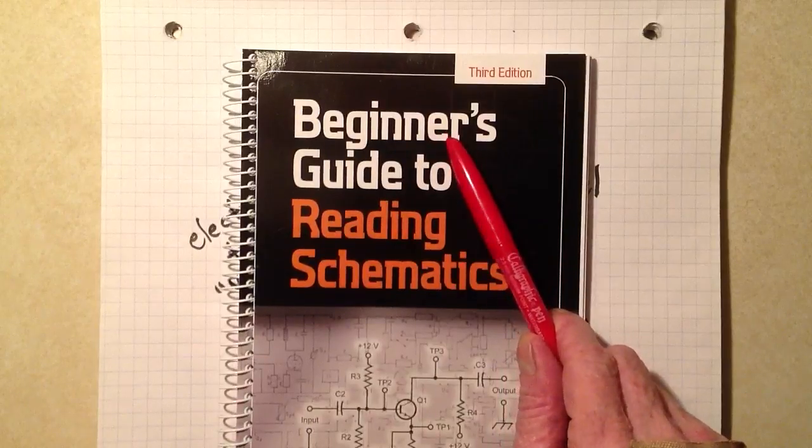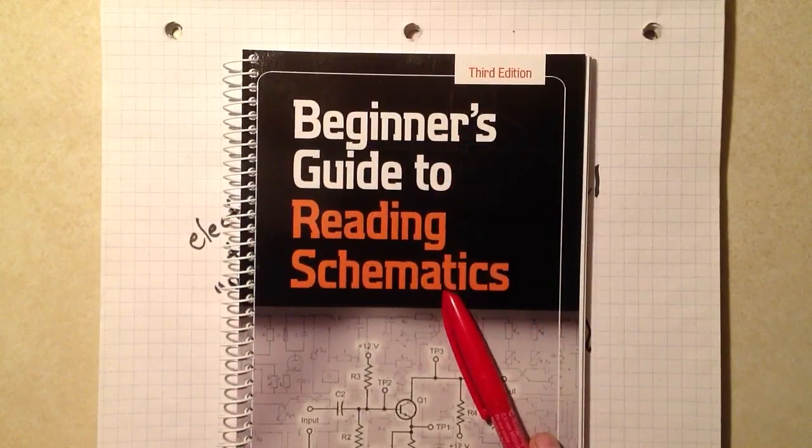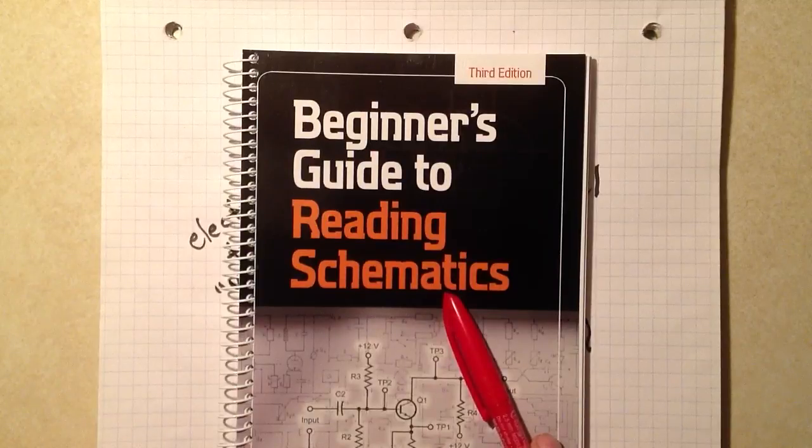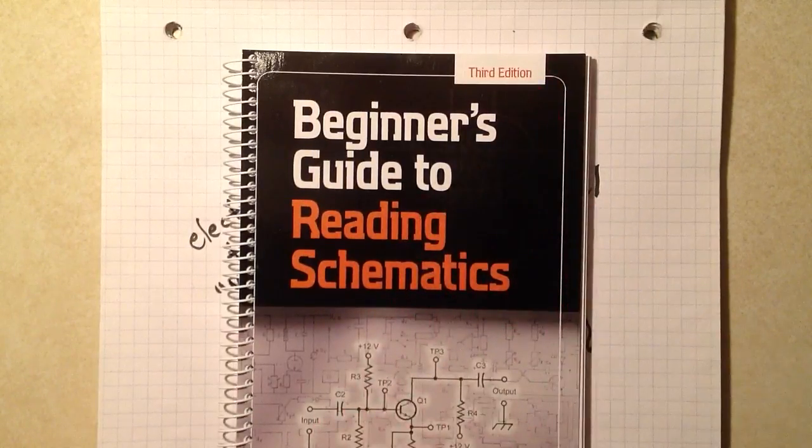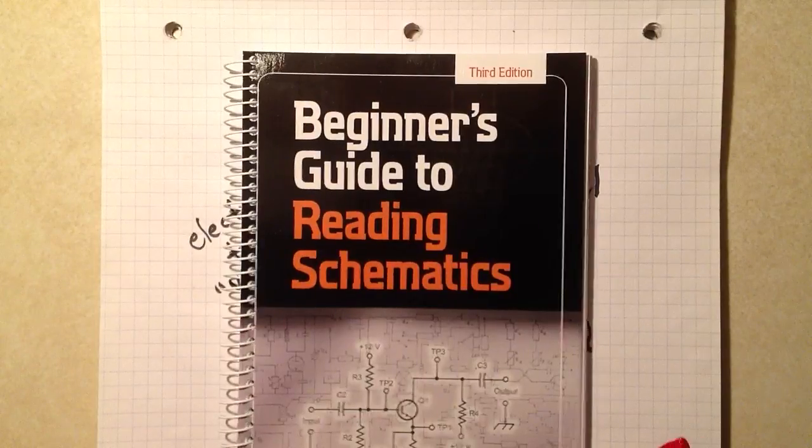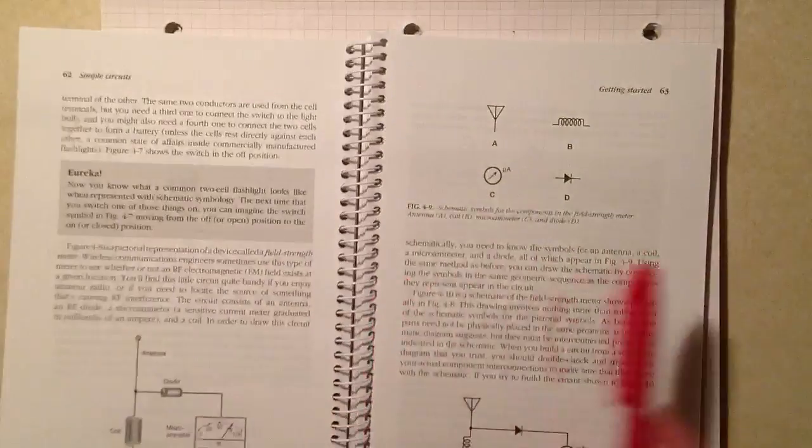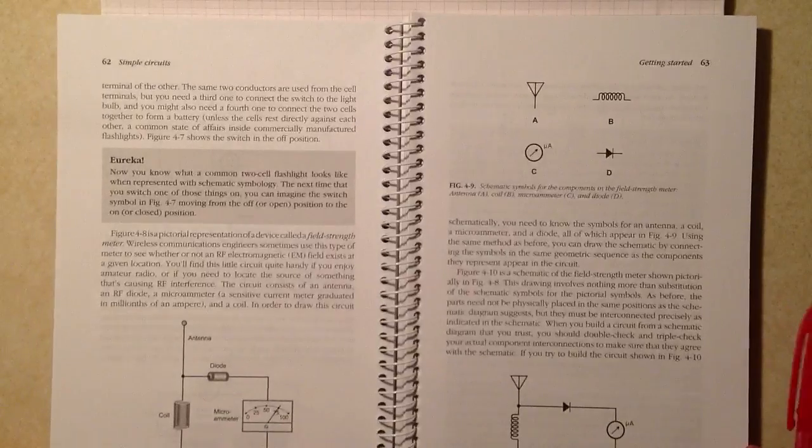This series of videos has to do with Beginner's Guide to Reading Schematics, published by McGraw-Hill in October 2013, the third edition edited by yours truly. Spiral binding, so that it will lay flat if you get the paper edition.